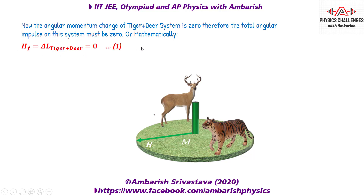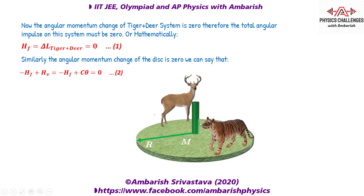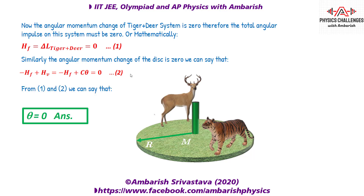The disc has also come to a standstill, so the net angular impulse on the disc must also be zero. The angular impulse on the disc is: friction angular impulse minus HF, plus viscous angular impulse HV. We showed that HV is proportional to theta directly, so minus HF plus C-theta equals zero. From equation 1, HF equals zero. Substituting, C-theta also equals zero. Using these two equations, we can very easily see that the total net angle through which the disc has turned is zero.